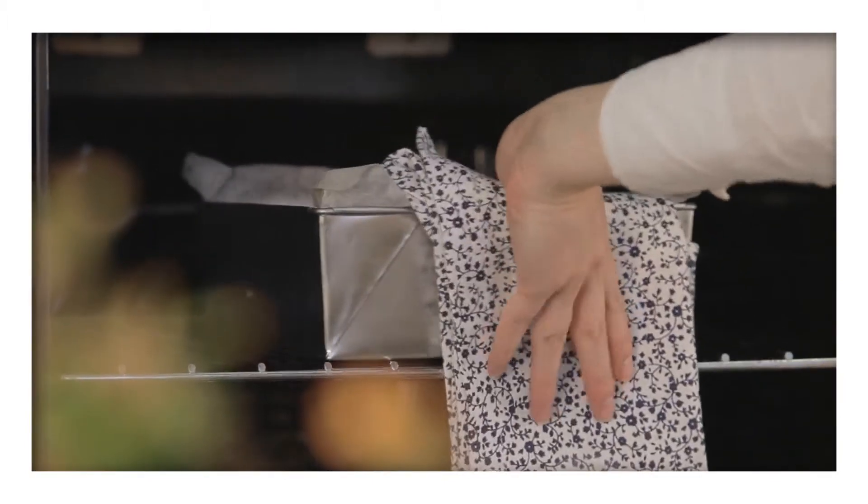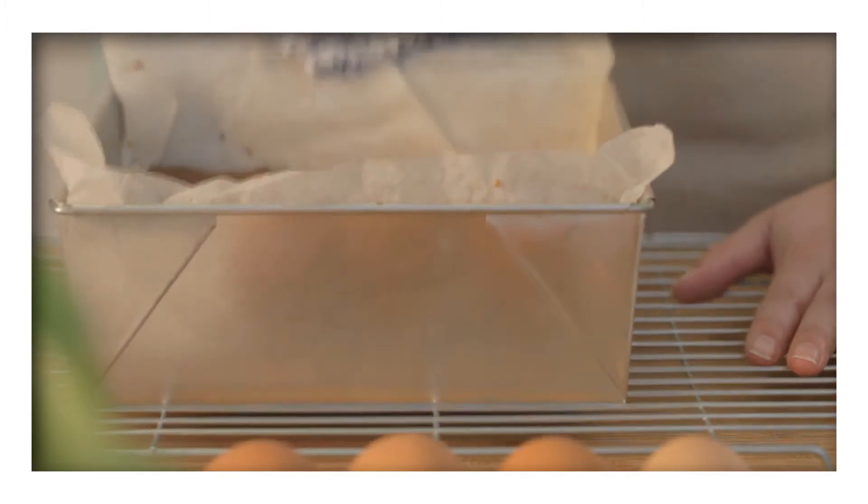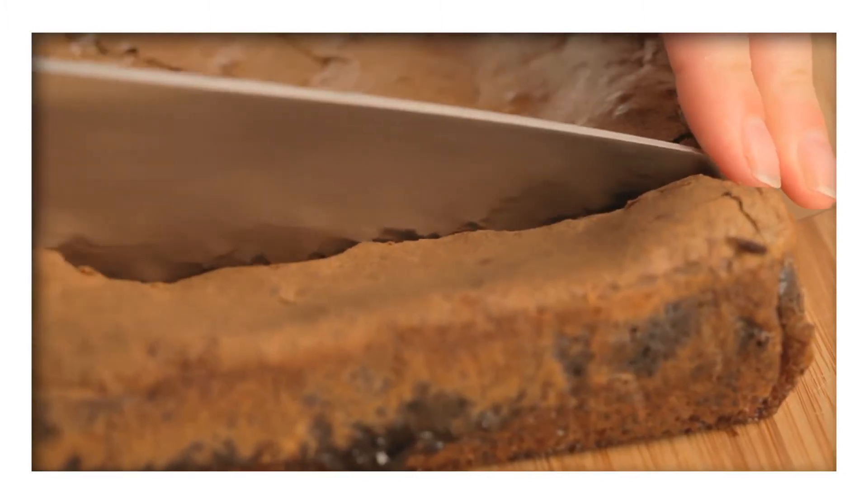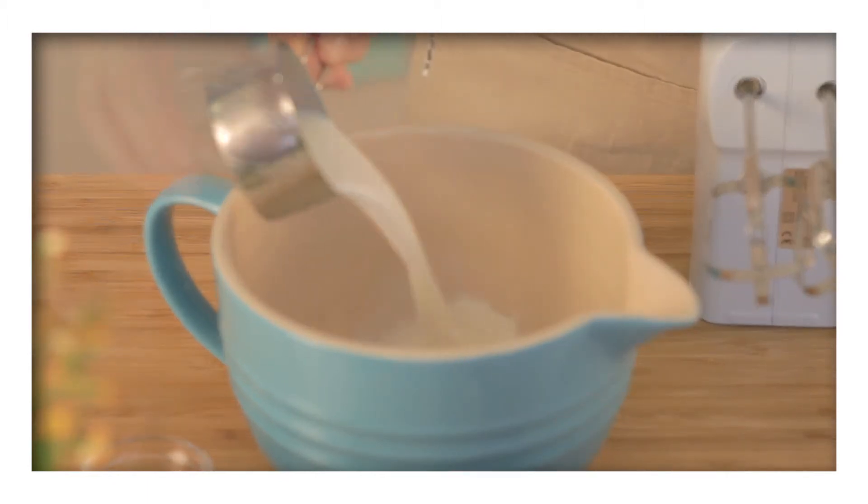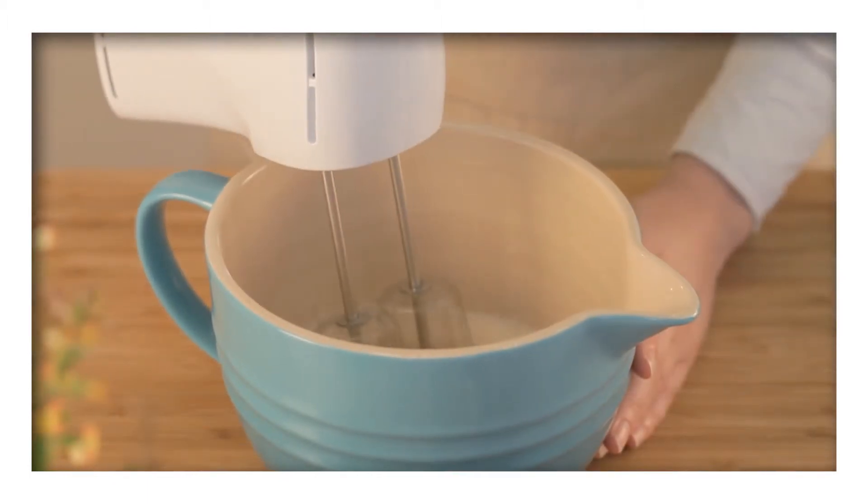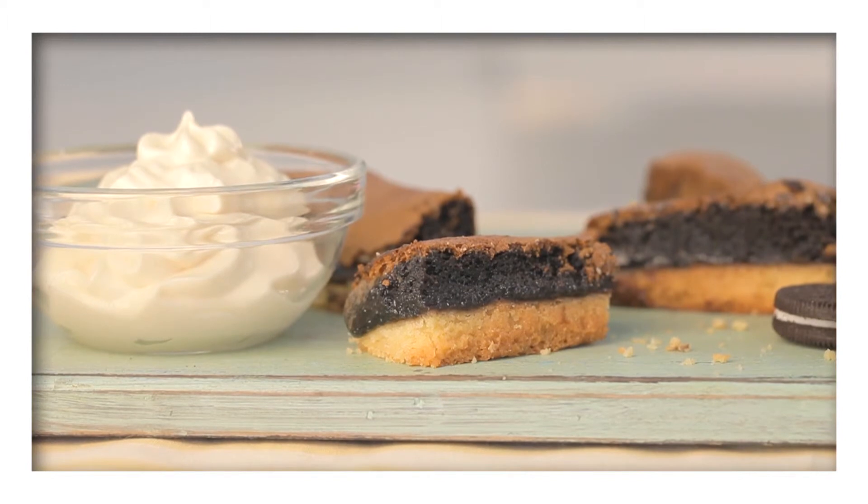Remove it from the oven once it's set around the sides and place it on a rack to cool. Once cooled, cut it into fingers, then make the Dream Whip topping by following the instructions on the pack and serve it in a bowl alongside your gooey Oreo slices.